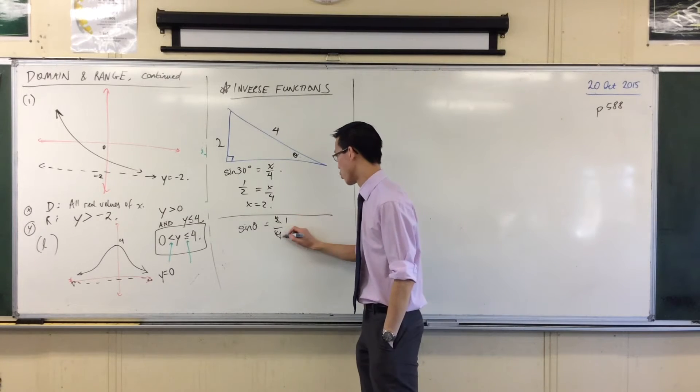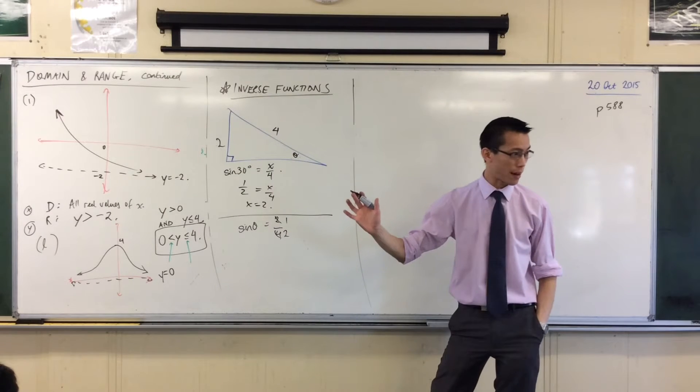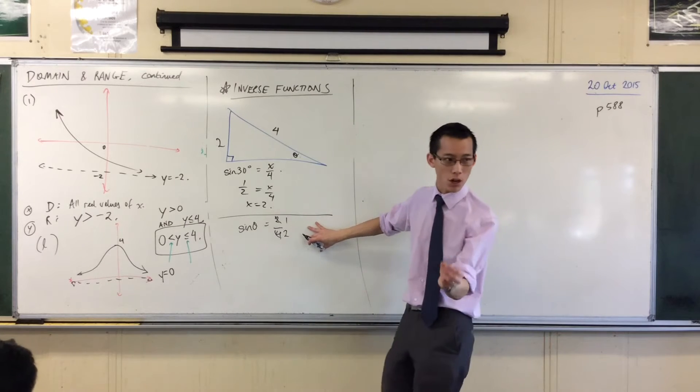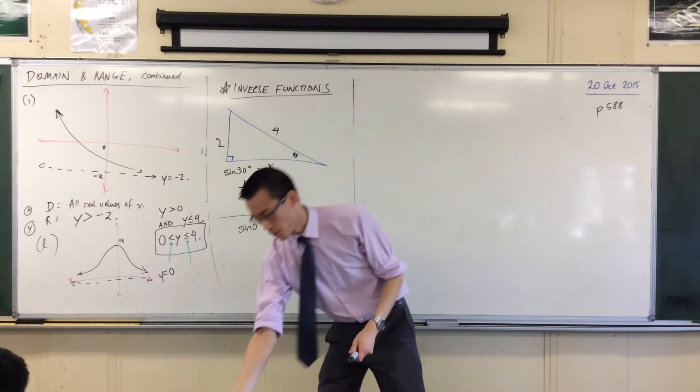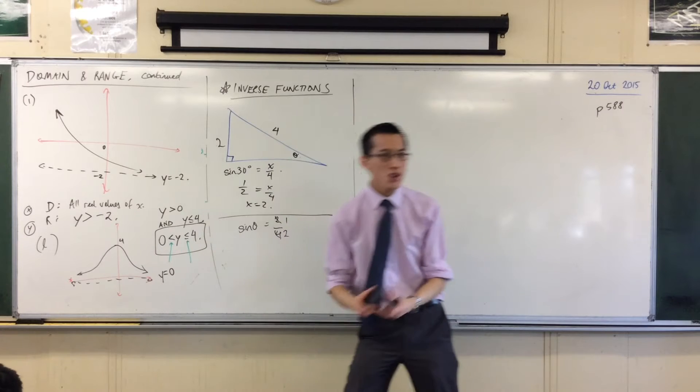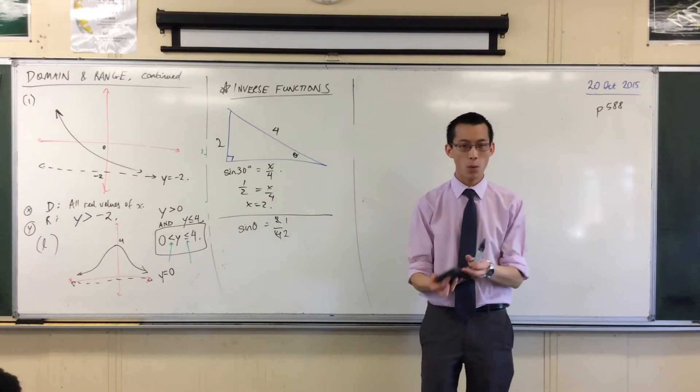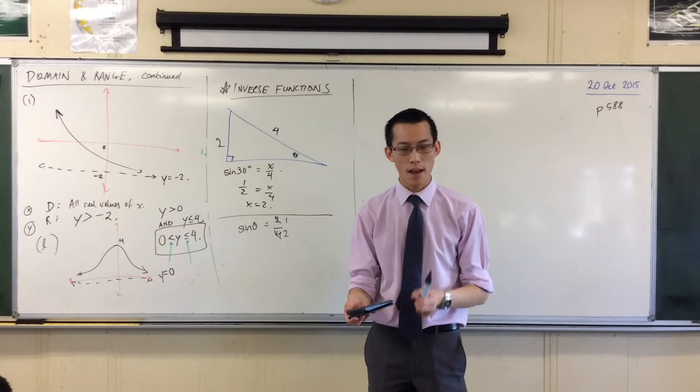I know that 2 over 4 is just 1 over 2, it's just an equivalent fraction. Now, at this point, if you didn't know what the answer was, you would reach for your calculator. And then you would put in, you would press some particular buttons. Which buttons would you press? Sine inverse. Aha! You go shift, right? And then you press the sine button.